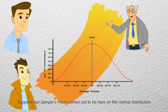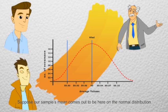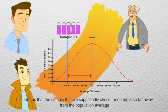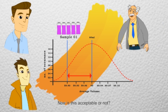Suppose our sample's mean comes out to be here on the normal distribution. This tells us that the sample that we supposedly chose randomly is so far away from the population average. Now, is this acceptable or not? Who decides that? Is there a basis?